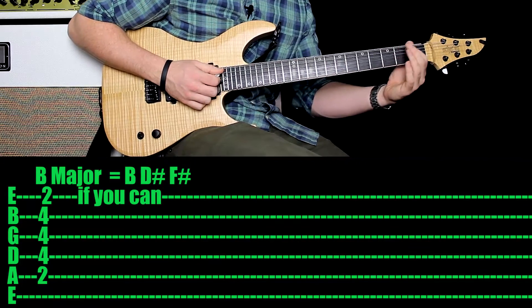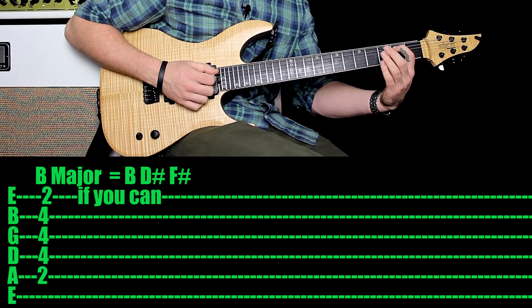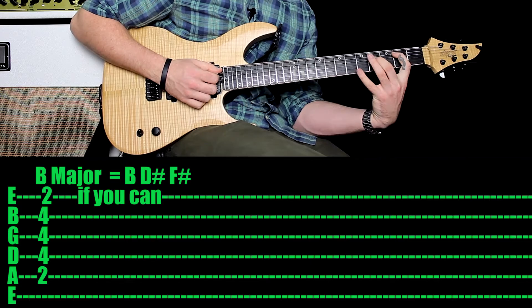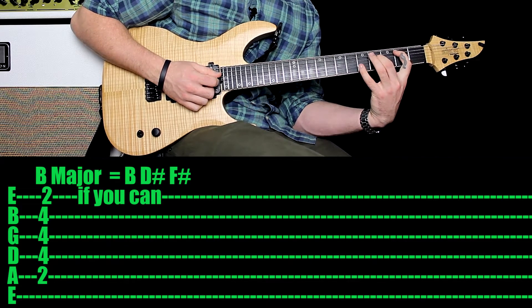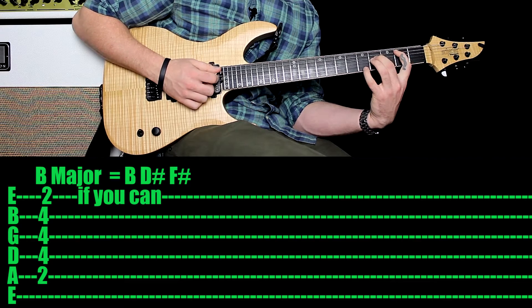With your first finger, you want to come in on the second fret of the fifth string, because that's your B note again. A big stretch here, you want your second finger on the fourth fret of the fourth string, that's your F sharp. So we've got a power chord already happening.